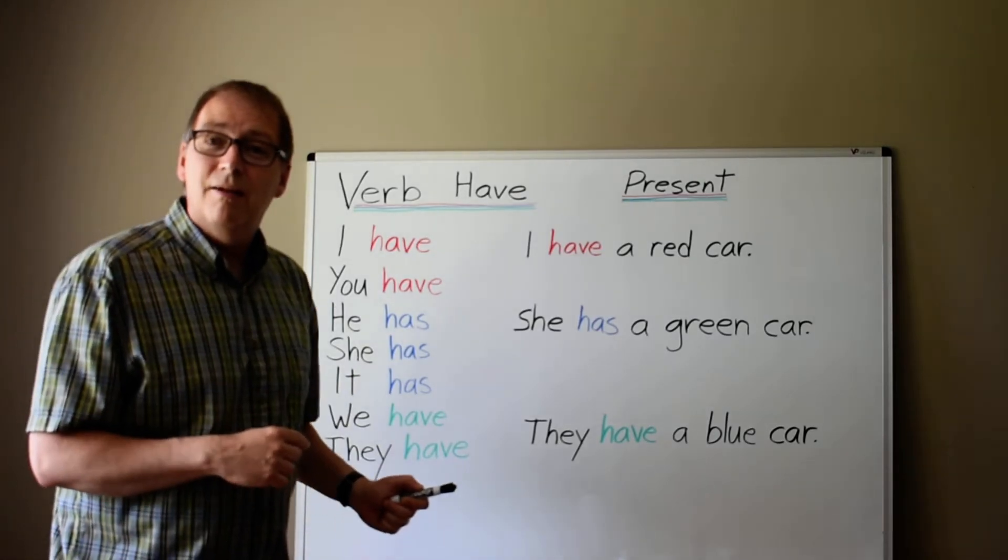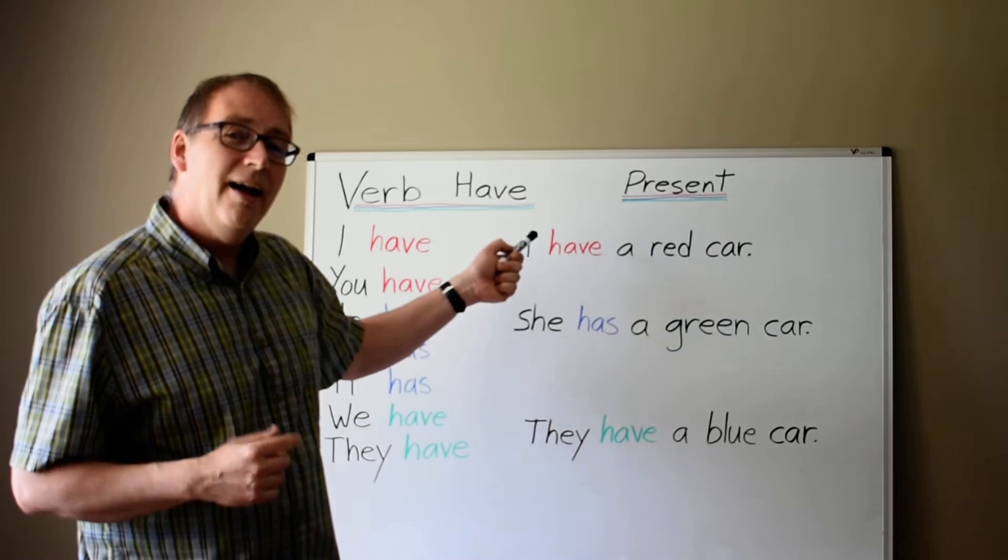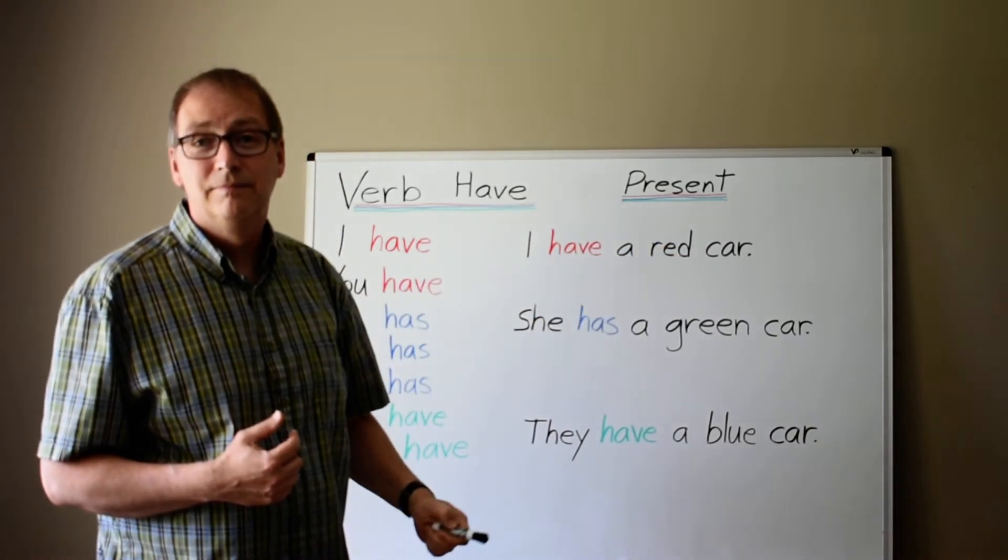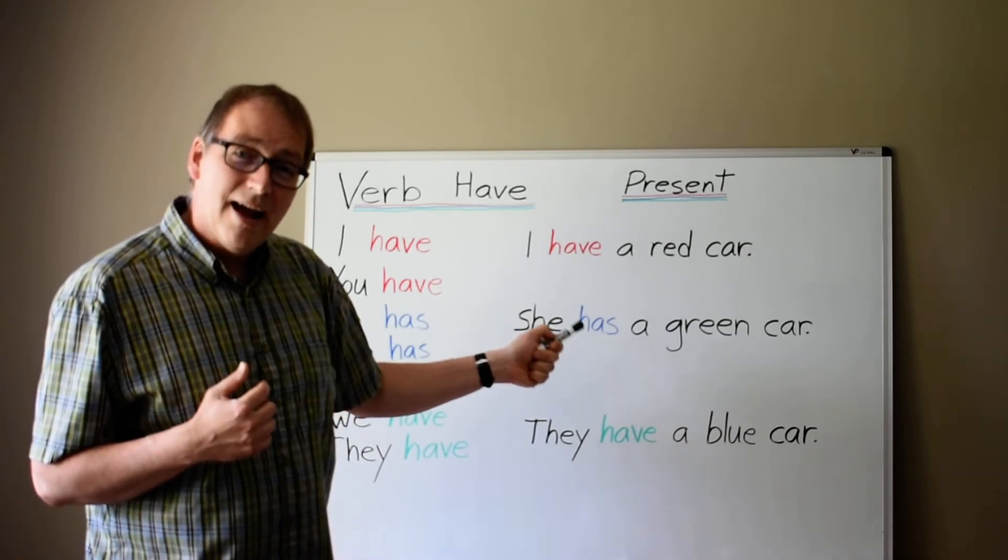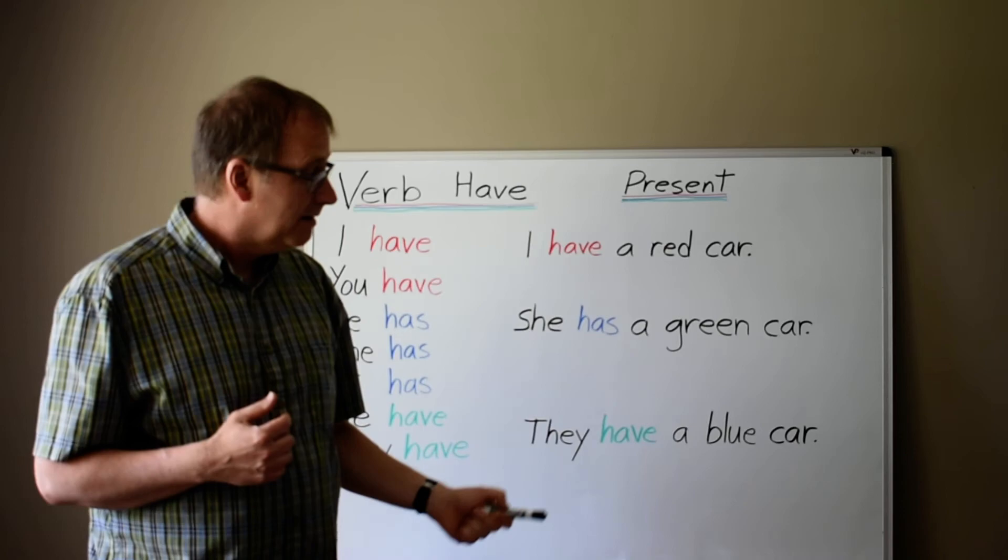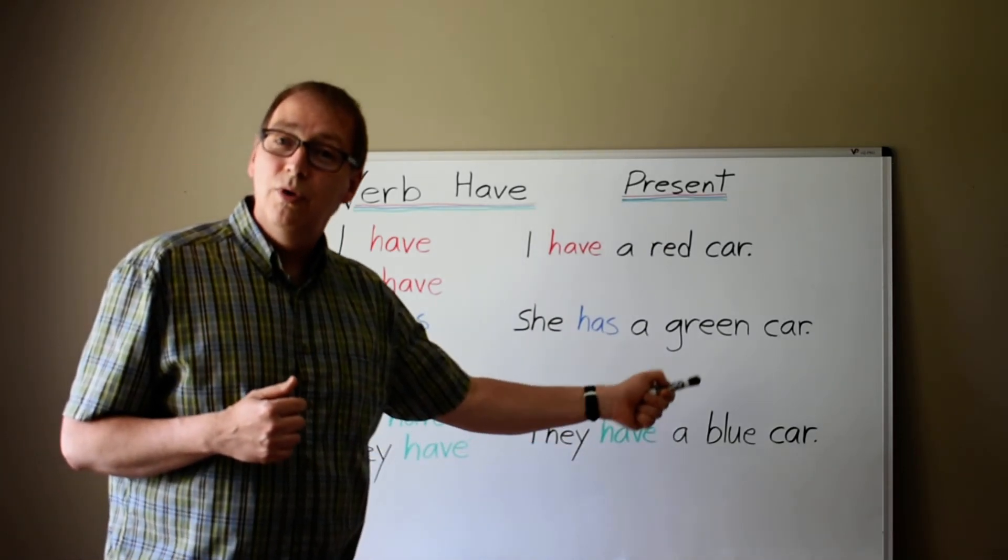Here are some short sentences. I have a red car. She has a green car. They have a blue car.